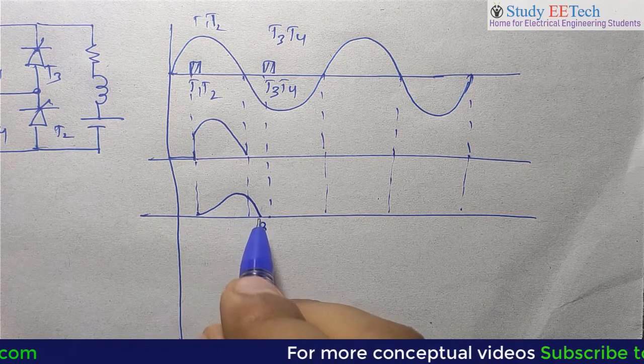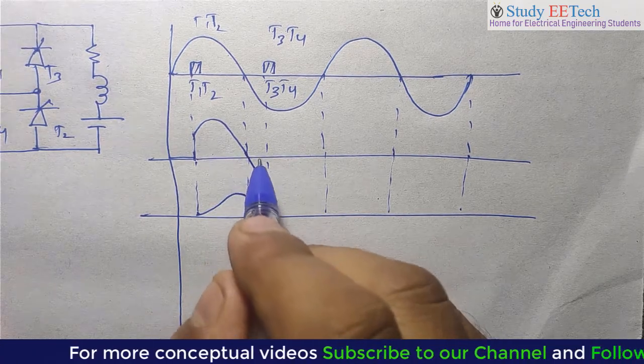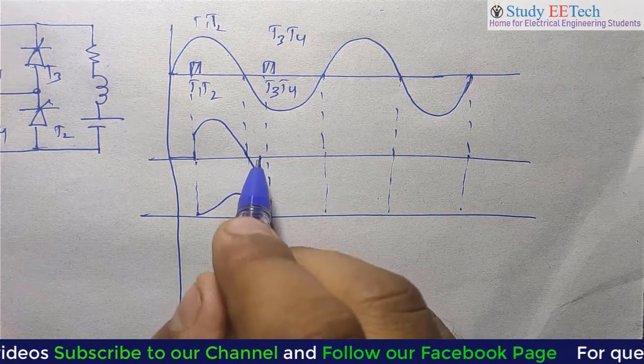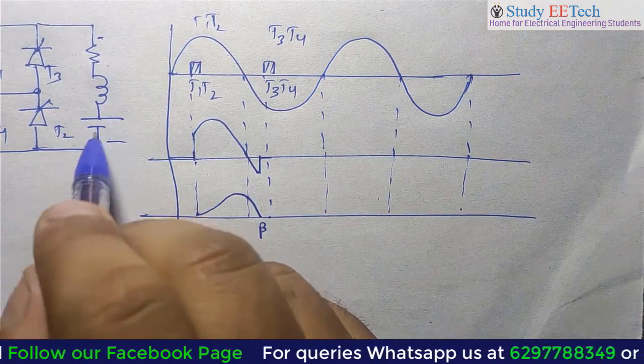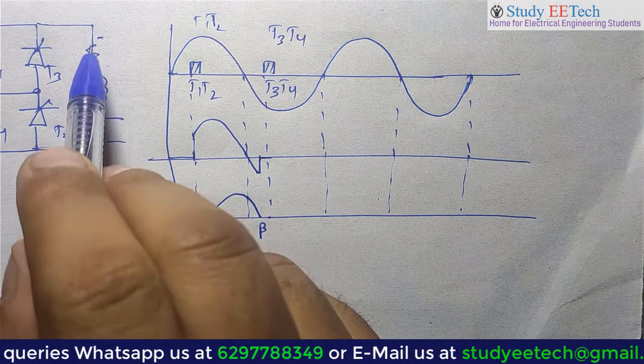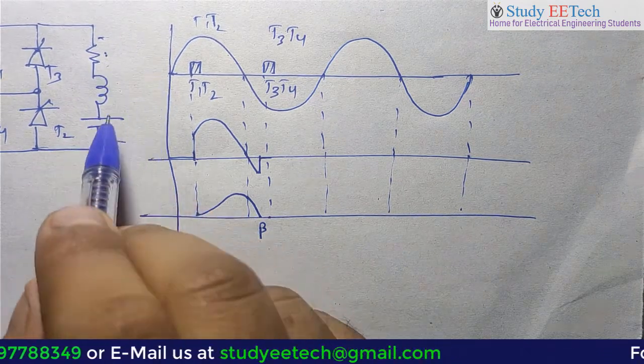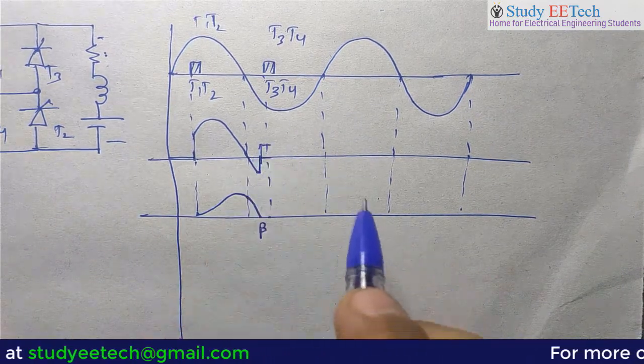So if this situation occurs, we will get the negative swing till the beta point is reached. Right after this beta point, we will not get zero voltage. Rather we will get the voltage E here. Because inductance is completely discharged, current has become zero. So the voltage drop here is zero. We will get only the back EMF E.